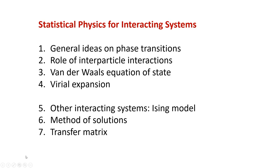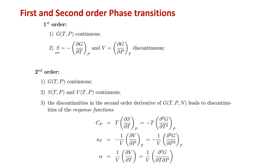Let us start with a general definition of phase transitions. We have said that the Gibbs free energy is continuous, and a first-order phase transition says the Gibbs free energy is continuous but the first derivative — either with respect to temperature or pressure — is discontinuous. The first is called entropy and the second is volume; they discontinuously change across a first-order phase transition.